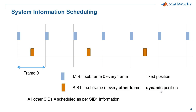MIB and SIB1 are the only blocks with a fixed periodicity. MIB occurs in subframe 0 of every frame at the same location in the OFDM grid. SIB1 occurs in subframe 5 of every other frame starting with frame 0. All other SIBs are scheduled as per the information carried by SIB1.